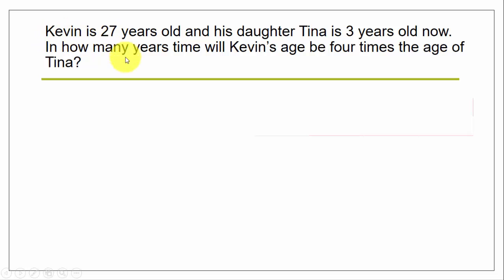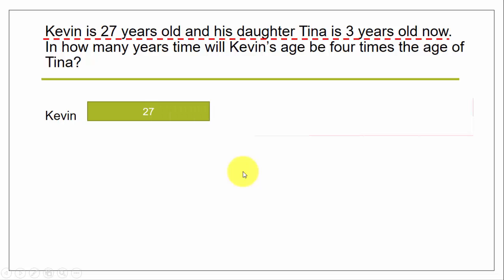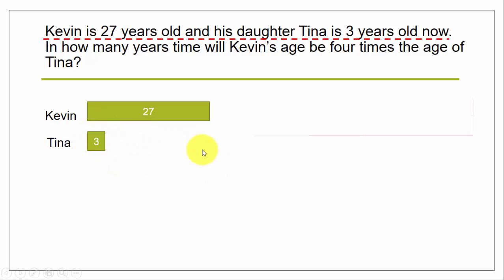First, let's address the first condition: Kevin is 27 years old and Tina is 3 years old. For Kevin, we draw a block or unit — the value of this whole block is 27. For Tina, we draw a smaller box. We also know the difference between their ages: 27 minus 3 equals 24.